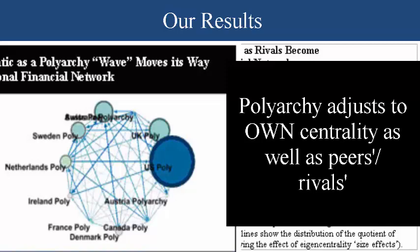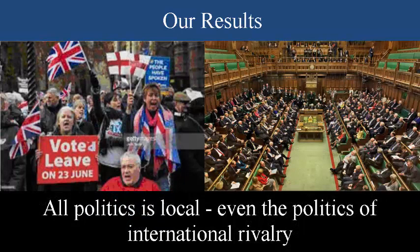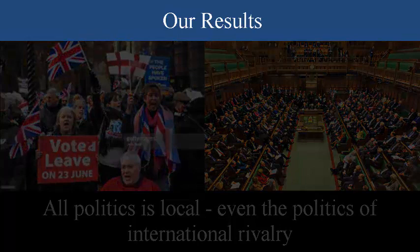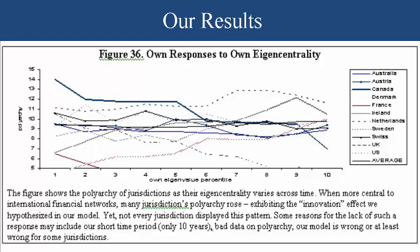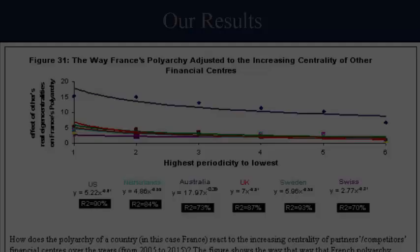Where we see polyarchy helping a jurisdiction's centrality is when polyarchy responds to an international financial center's own centrality. Namely, in Figure 36, we show how, in various jurisdictions, its own polyarchy changed as its centrality rose. For a lot of jurisdictions, as that jurisdiction got bigger and became more central, that polyarchy rose in response.